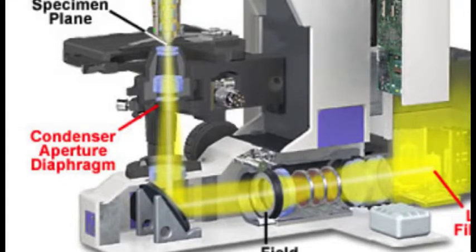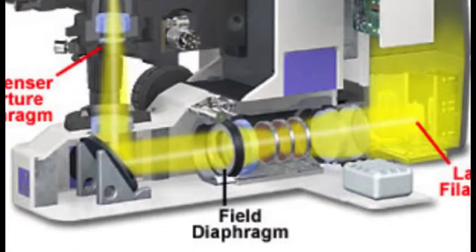We want to align our optical system so that we have no specular reflection or internal reflections in the microscope. And in order to do that, we have to close down the field diaphragm so that we see it in the field of view.